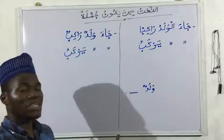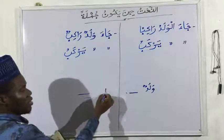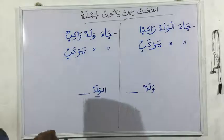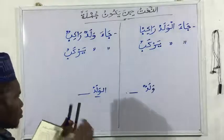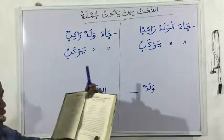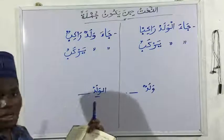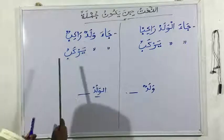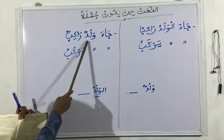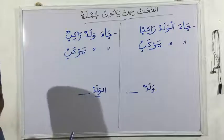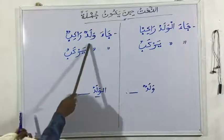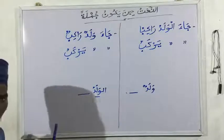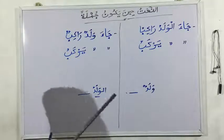Wa ba'da al-ma'rifati hal: if a sentence is now coming after an ismu that is ma'rifah — definite, with al — it is going to be hal for it. For example, ja'a waladun rakibun — a riding boy came. This is nakira, indefinite. We don't know what boy — it's indefinite. So ja'a waladun rakibun: a boy riding came, like, a riding boy came.